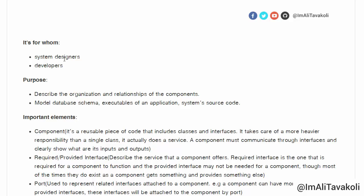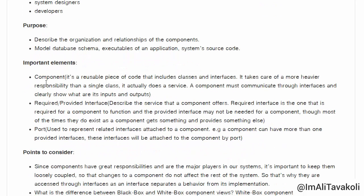Component diagrams are used by system developers and designers. Their purpose is to describe the organizational relationships of the component model, database schema, executables of an application, and source code. The important elements of a component diagram are: the component itself, which is a reusable piece of code that includes classes and interfaces and must communicate through interfaces.